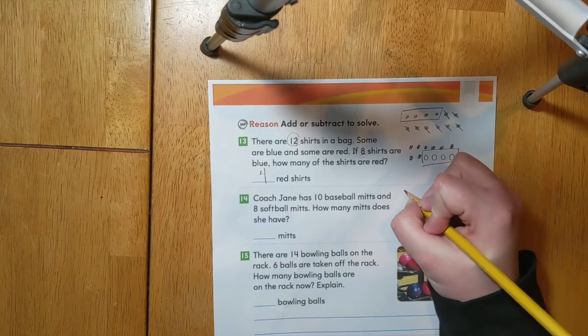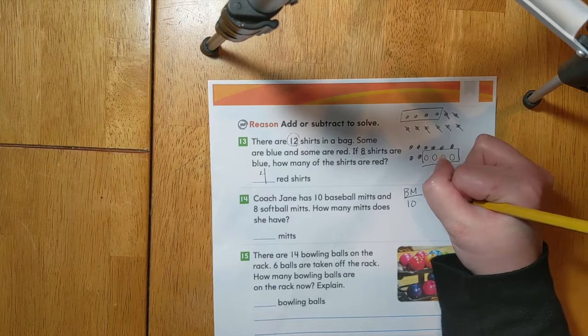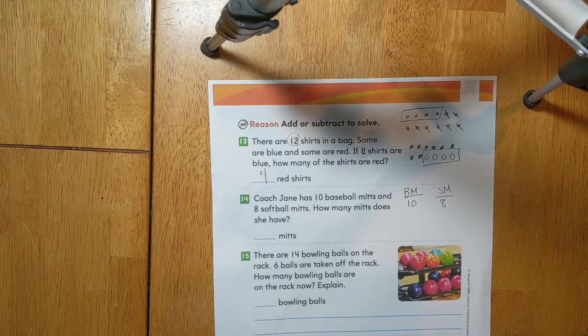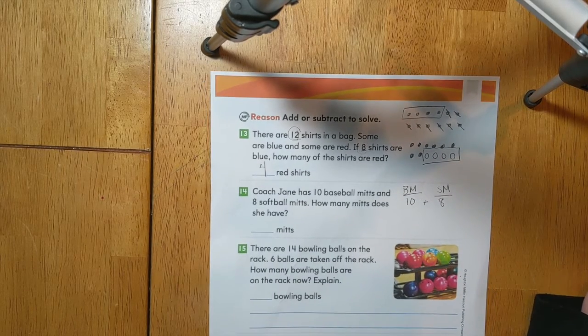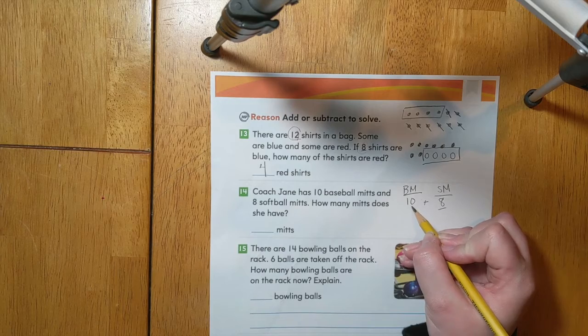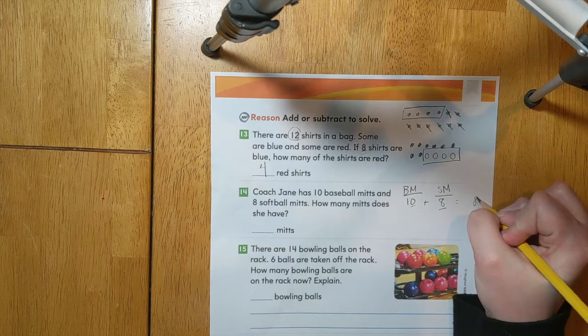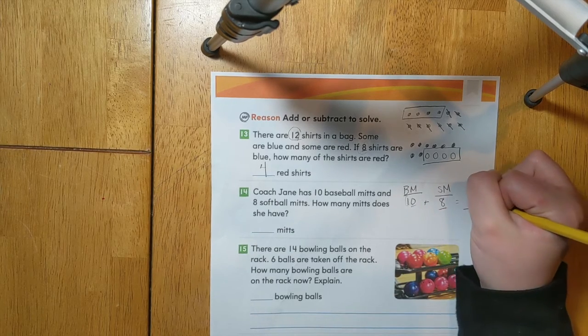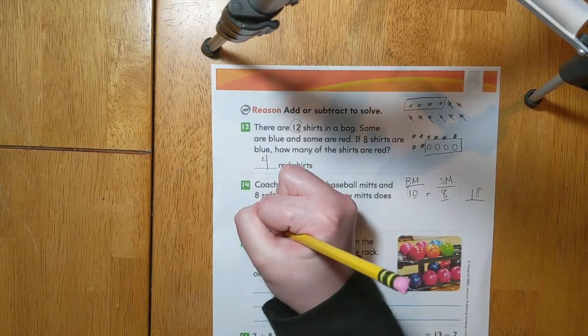We know that there are 10 baseball mitts and 8 softball mitts. We can show this by adding 10 plus 8. Since this number 8 is just one number in the ones place and there is a zero in the ones place here, we can put the 8 in the ones place in the answer and we add a group of 10. So all together Coach Jane has 18 mitts.